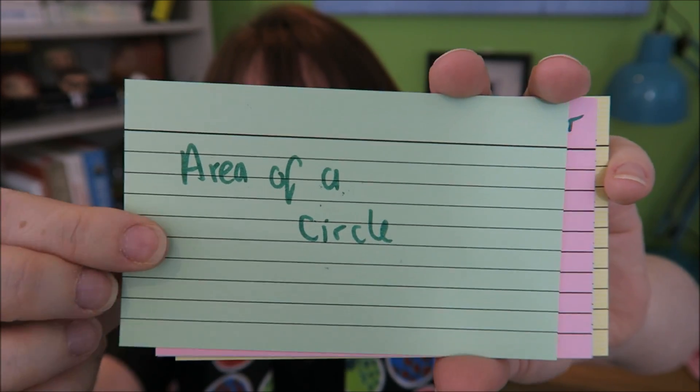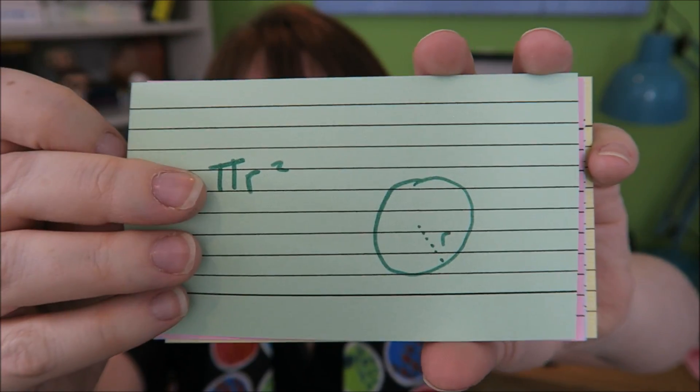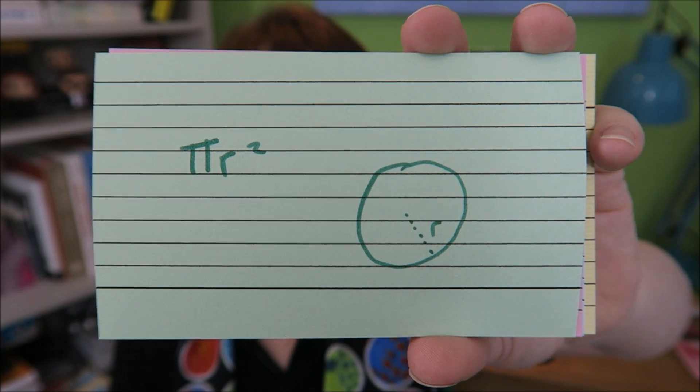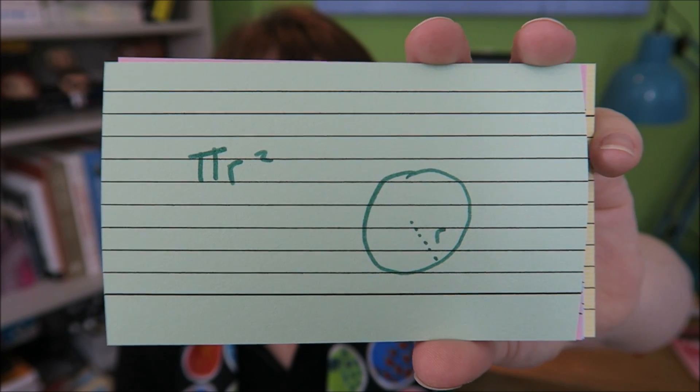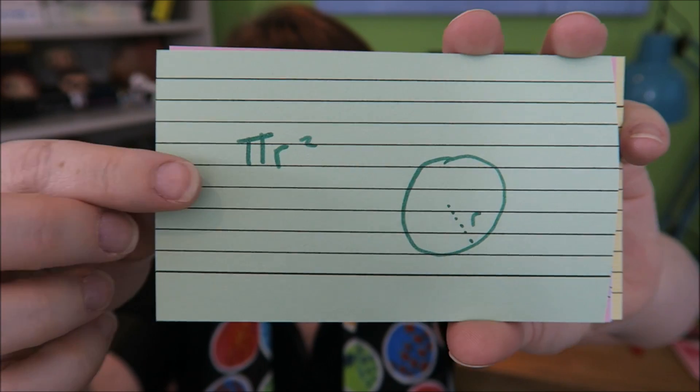Area of a circle. Your area is pi R squared. R is your radius. That is a bit from the middle to the edge.